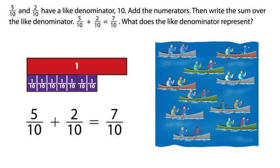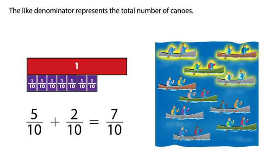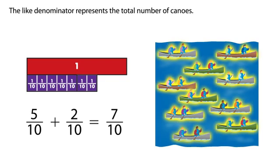What does the like denominator represent? The like denominator represents the total number of canoes.